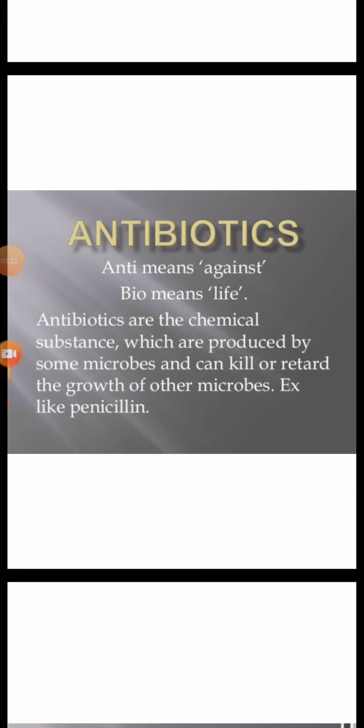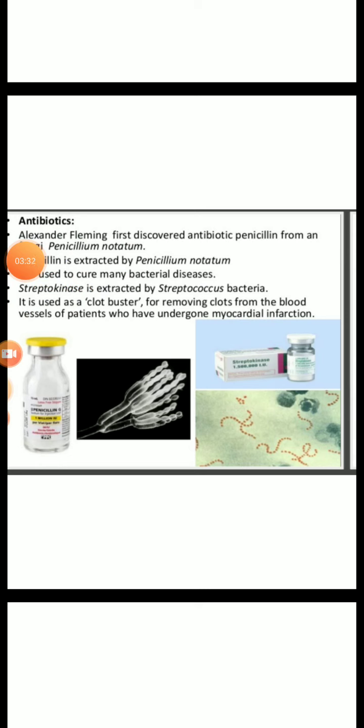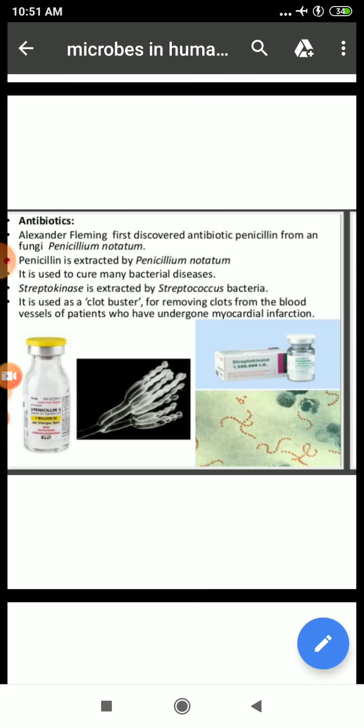Antibiotics are chemical substances produced by some microbes that can kill or retard the growth of other disease-causing microbes. Penicillin was the first antibiotic to be discovered, and it was a chance discovery. Alexander Fleming, while working on Staphylococci bacteria, observed a mold growing in one of his unwashed culture plates around which Staphylococci could not grow. He found it was due to a chemical produced by the mold and named it penicillin, after the mold Penicillium notatum — a kind of fungi.